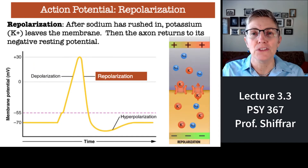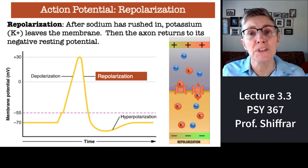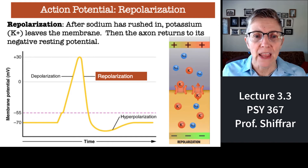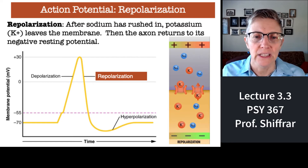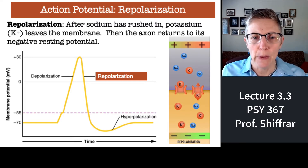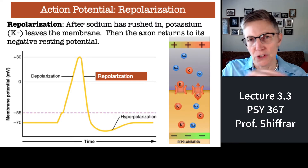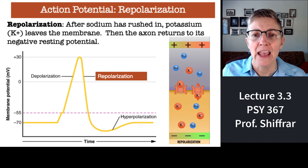Then what happens? The membrane becomes repolarized — it becomes negative again. That happens when positive potassium ions leave the membrane. So it started out negative, went positive, and now it's going back negative.